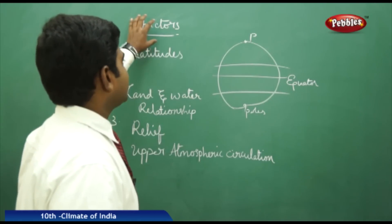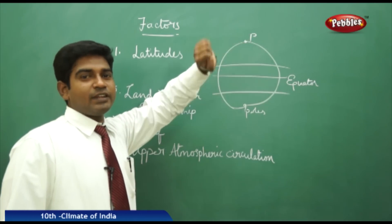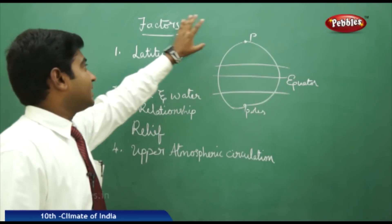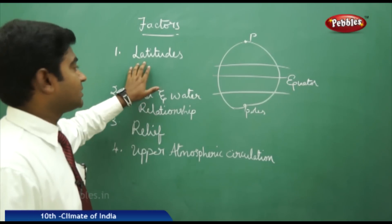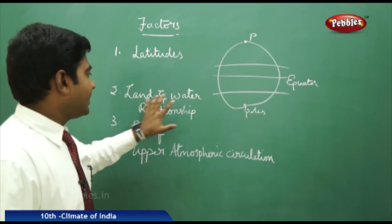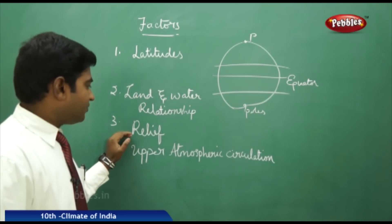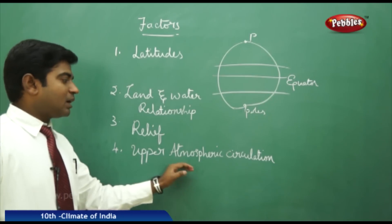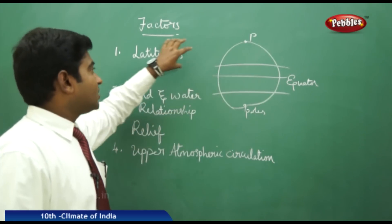The factors influencing the climatic condition of any region are divided into four categories: latitudes, the land and water relationship, relief, and upper atmospheric circulation.